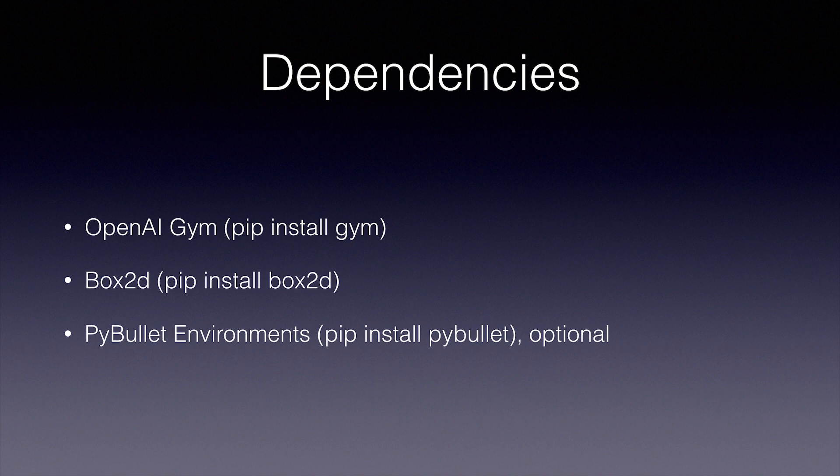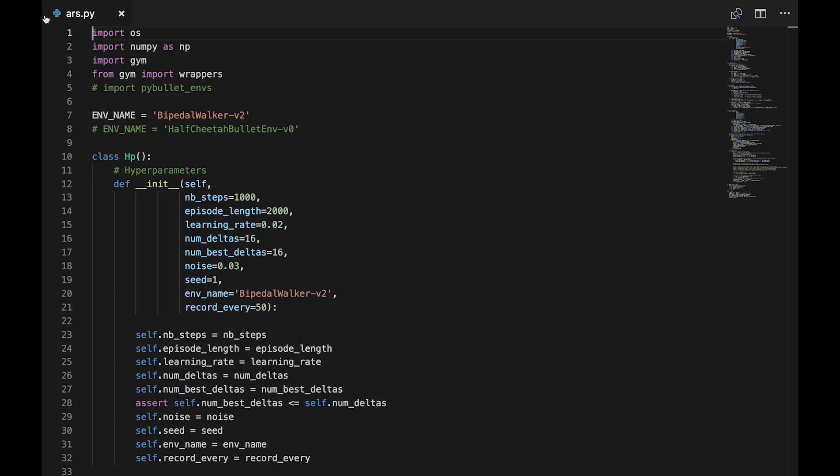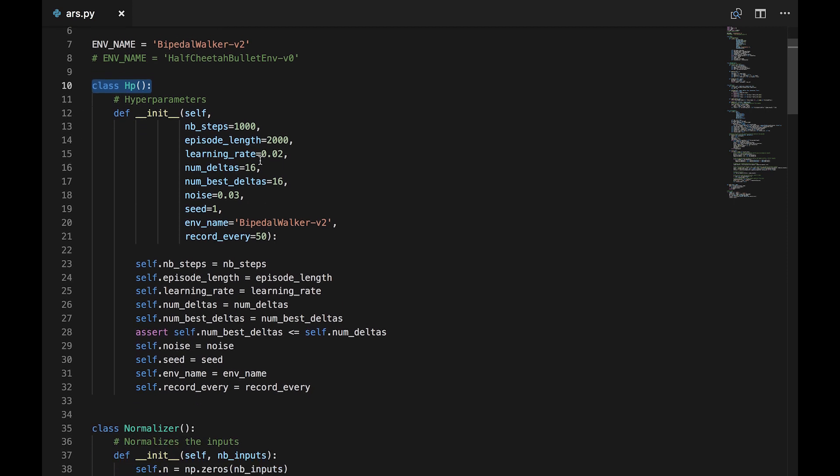Alright, now that we know the basic algorithm and understand how it works, let's dive into the actual code. Alright, the first thing we'll see after some basic imports is the HP class. This stores the hyperparameters for tuning.